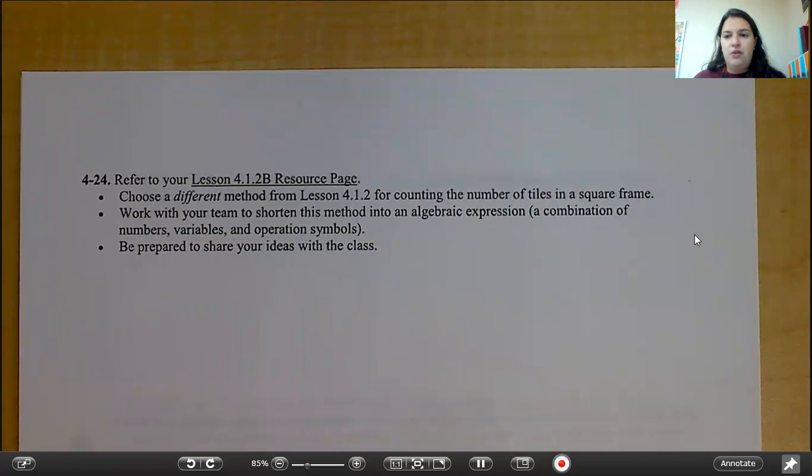So if you do not write on the resource page, what you're going to do is you're going to need to get your 4-1-2 notes out. And where it goes through those six names, like Raymond and all those, you're going to want to look at those. You are looking at those methods that those students chose, and you are trying to shorten one of them into an algebraic expression.